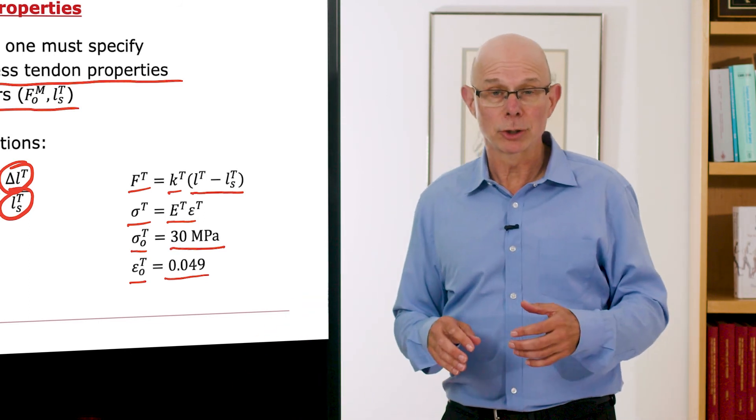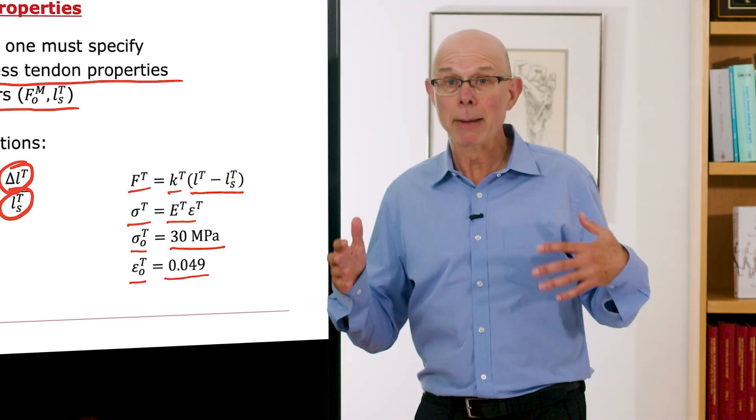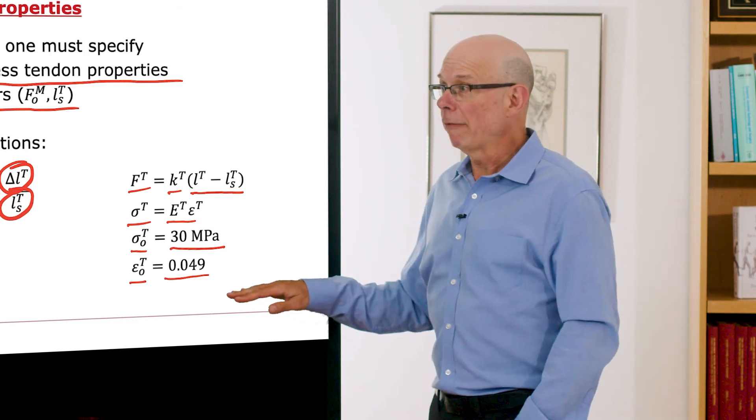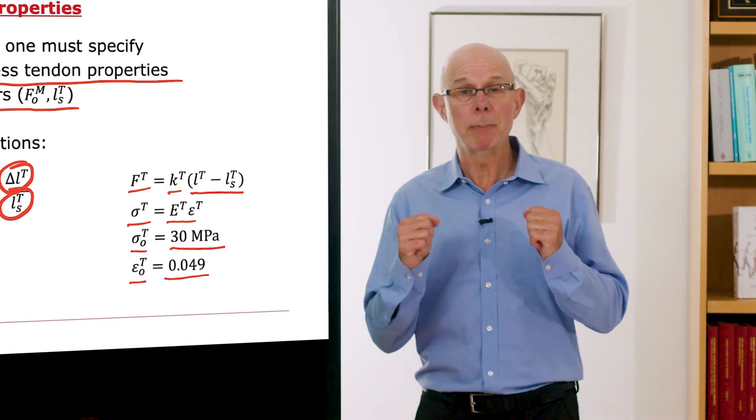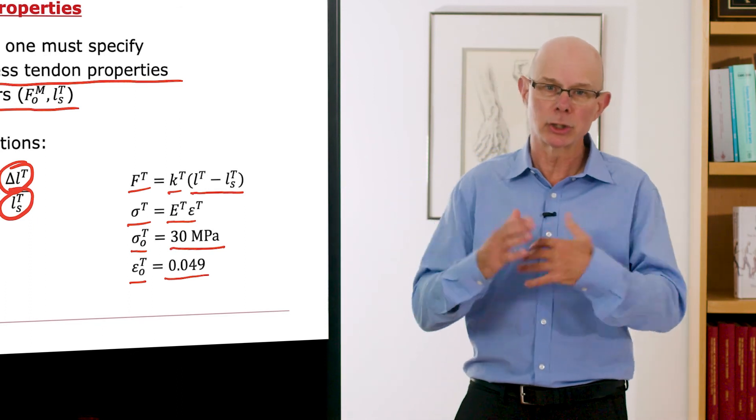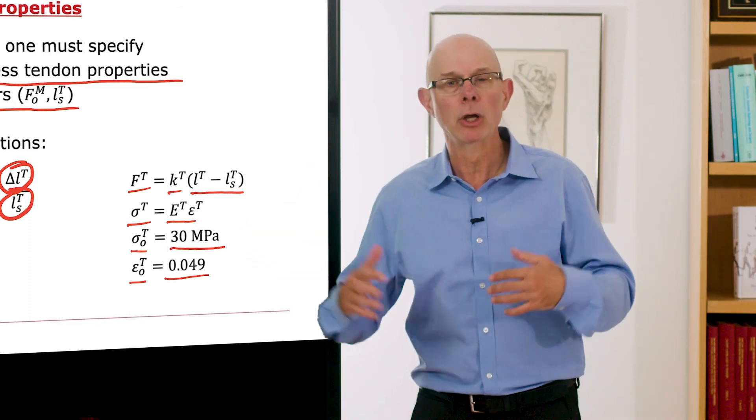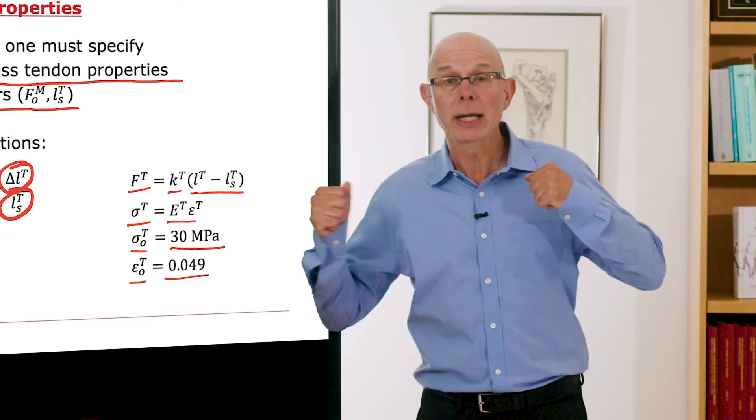Tendon ruptures at about 10%. If it's strained 5% when the muscle is developing its maximum force, what that suggests is you have a factor of safety of about 2. If you could generate twice as much force, you'd break the tendon.